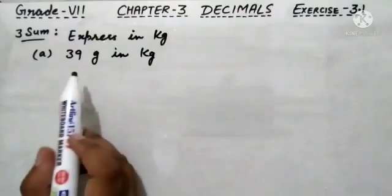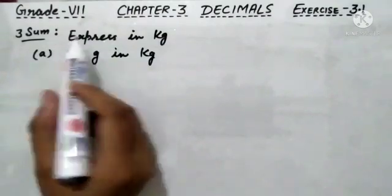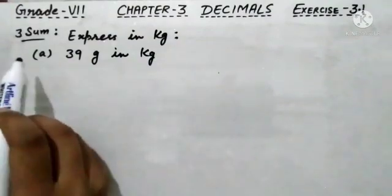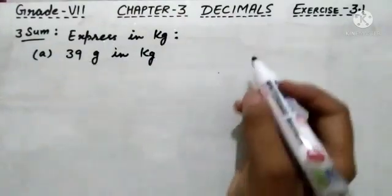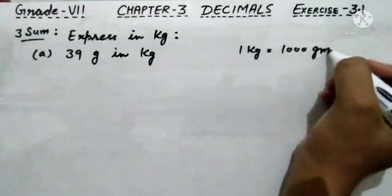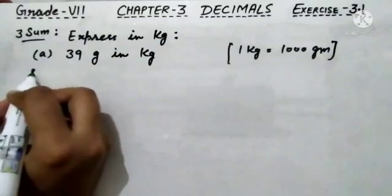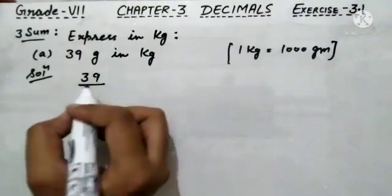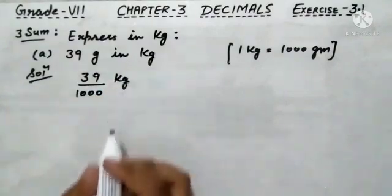Similarly, we can solve the third sum, which is quite similar to the second sum — the only difference is the unit. The statement of third sum is: express in kilograms. Two sub parts are given, A and B. Third sum A part is 39 gram into kilograms. The formula to keep in mind: 1 kilogram is equals to 1000 gram. Again, smaller unit is converted into bigger unit, so we divide. 39 gram can be written as 39 divided by 1000.